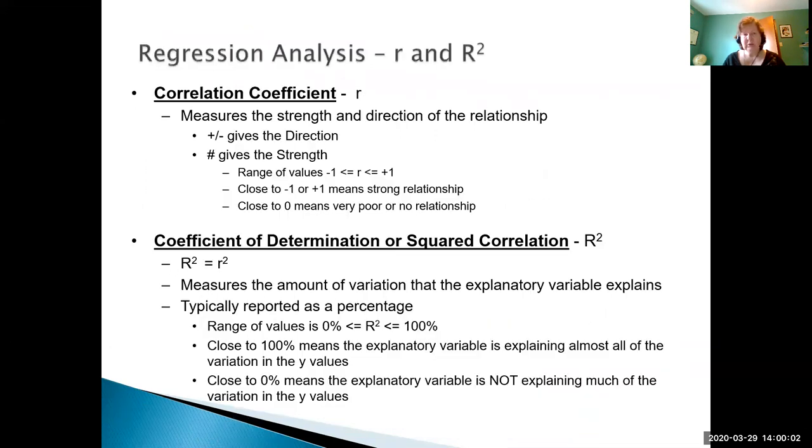Finishing up with this just to summarize both r and r square. Our correlation coefficient is little r. It measures the strength and the direction. The plus or the negatives gives the direction and the actual number gives the strength. Remember the smallest it can be is negative 1 and the largest it can be is positive 1. So close to negative 1 or positive 1 means a strong relationship, closer to the 0 means a very poor or possibly no relationship.